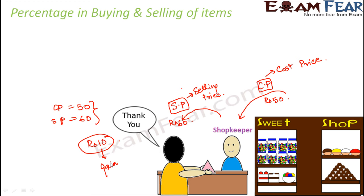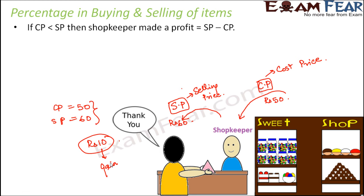With this concept in mind, whenever the cost price is less than the selling price, the shopkeeper is selling it at a higher price, so definitely the shopkeeper is making a profit. The profit is given by the difference of the selling price and the cost price — SP minus CP gives you the profit.